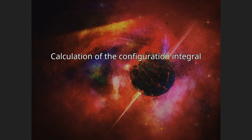After substitution, the equation for the configuration integral becomes: Q = (1/Vⁿ) ∫ ∏ᵢ d³rᵢ · ∏ᵢ<ⱼ (1 + fᵢⱼ).